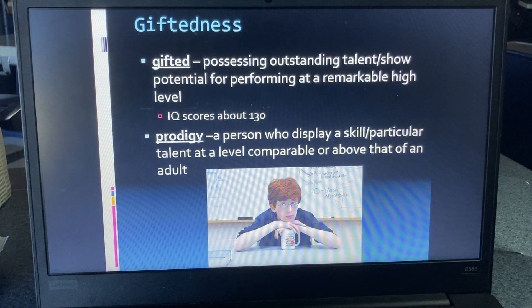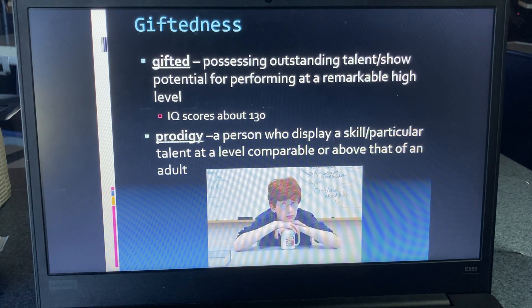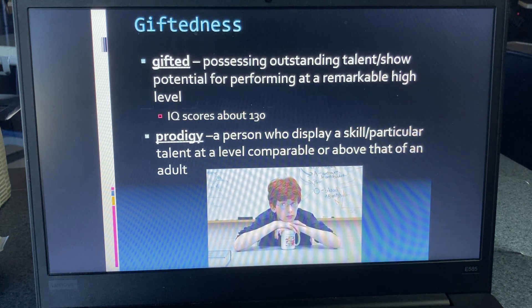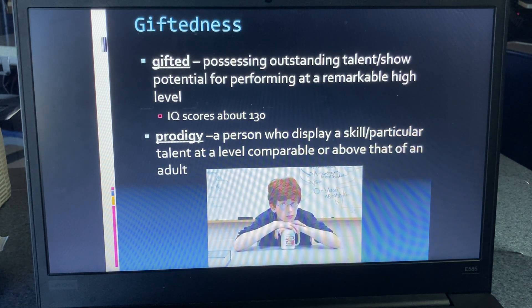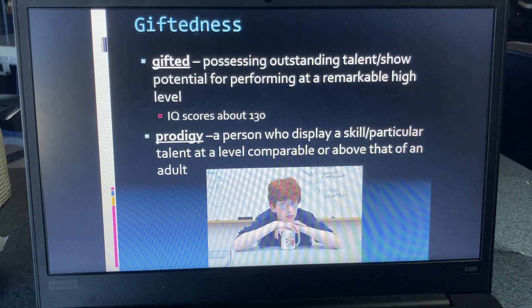On the other end of the spectrum is giftedness, which is a score over 130. What is often forgotten is that someone may be gifted in one area but not in everything — they might be gifted in math but treated as exceptional in every subject, which isn't always the case. There are also prodigies, most often seen in music or occasionally sports. Research suggests that child prodigies often burn out much faster due to the intense pressure to continue performing at a gifted level.